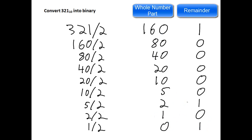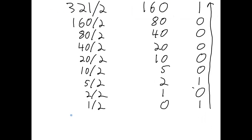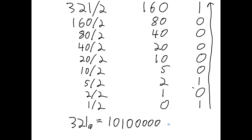Now I can build the binary number back up from the most significant bit at the bottom to the least significant bit at the top. So 321 in base 10 is equal to 1, 0, 1, 0, 0, 0, 0, 0, 1 — that is, 101000001 base 2.